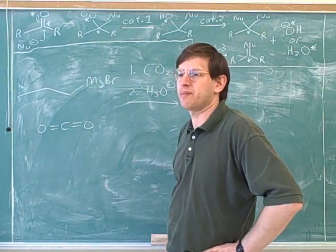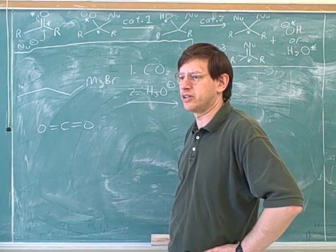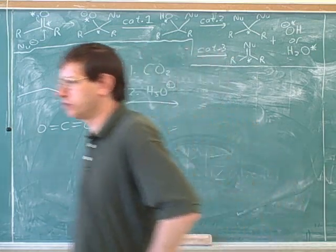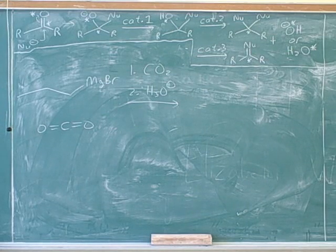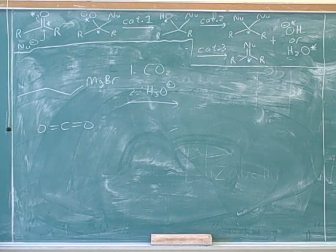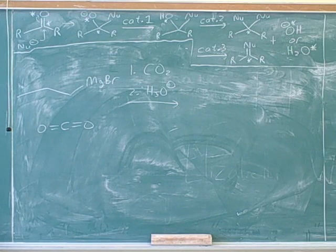And now we should really be able to predict what's going to happen based on previous principles. We should be able to draw a reasonable mechanism here, even though we've never seen this precise reagent before. So let's try what would be a reasonable reaction between our Grignard and our carbon dioxide.